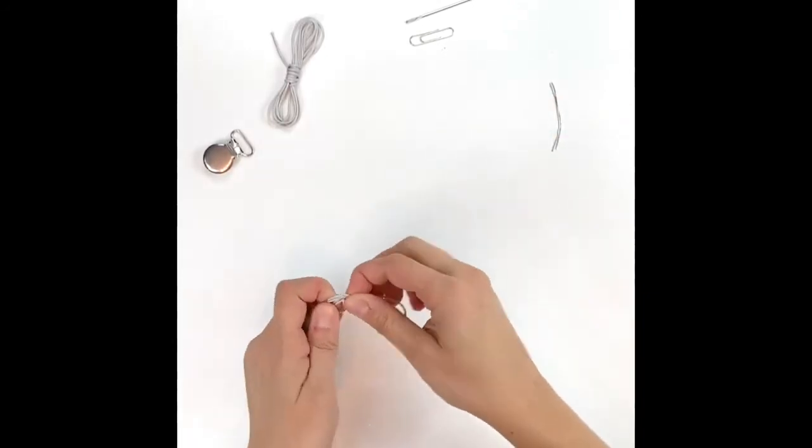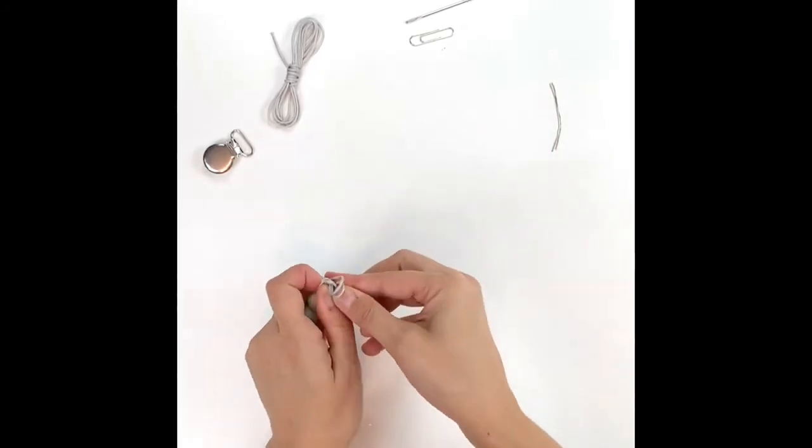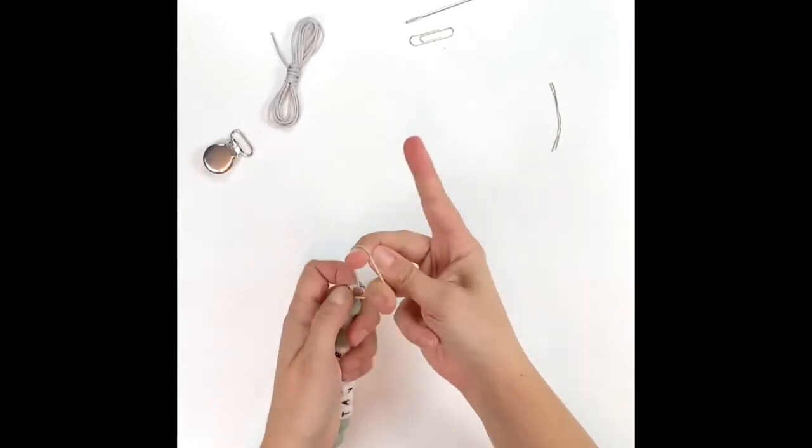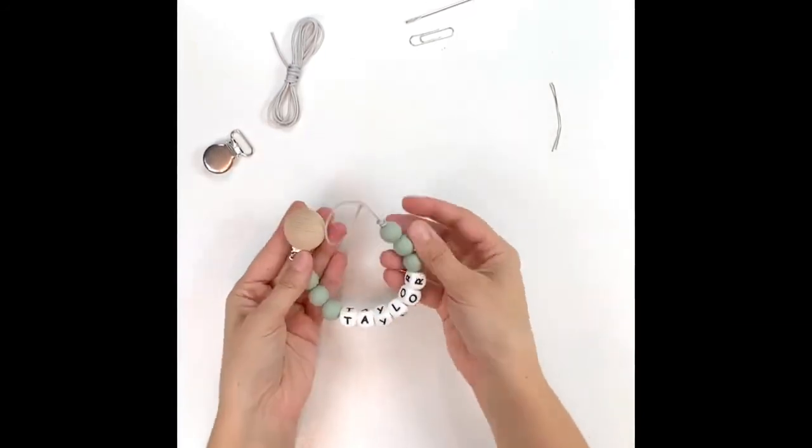Or you can simply tie a nice double knot. This is a nice simple double knot - feed it through twice, pull tight. And here is your clip.